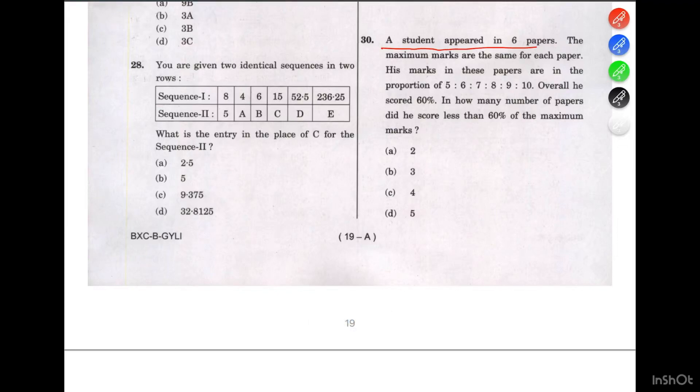A student appeared in six papers. The maximum marks are the same for each paper. His marks in these papers are in the proportion of 5 to 6 to 7 to 8 to 9 to 10.